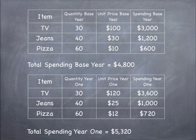The unit price for the base year for TVs is 100. The unit price for the base year for jeans is 30, and the unit price for the base year for pizza is 10. The unit price for year one for TVs is 120, for jeans is 25, and for pizzas is 12.